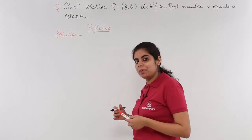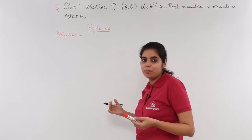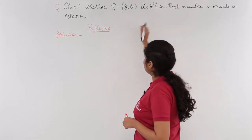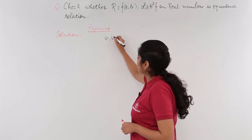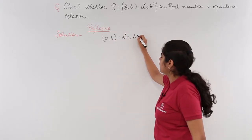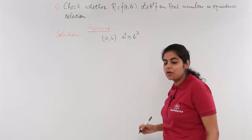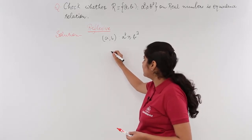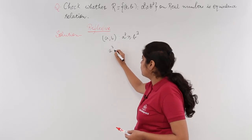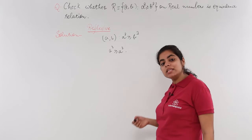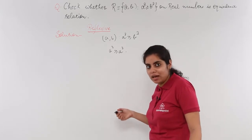I can replace a by b or b by a. For the relation (a,b) where a³ ≥ b³, when we replace b by a, we get a³ ≥ a³. Is this correct? Is it true? Is it valid? Yes.